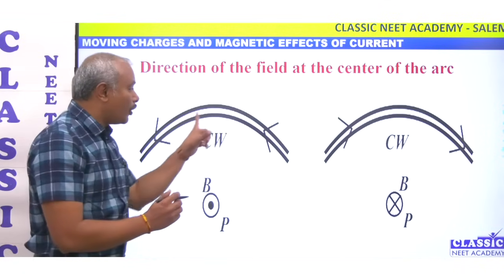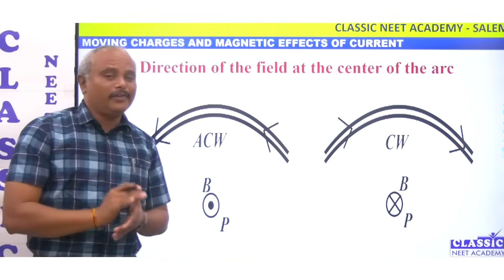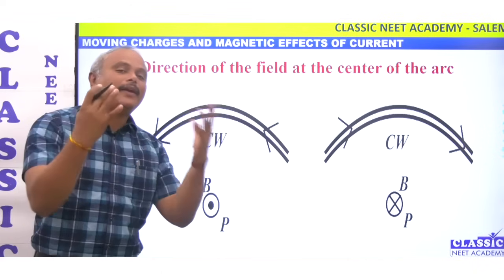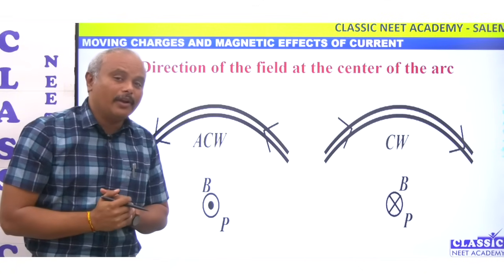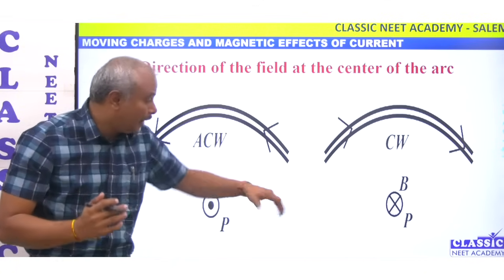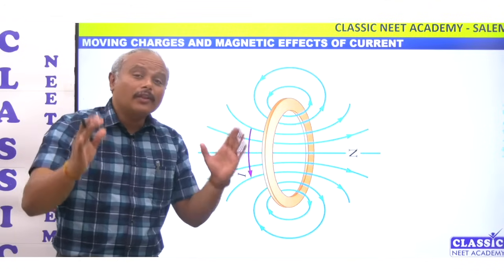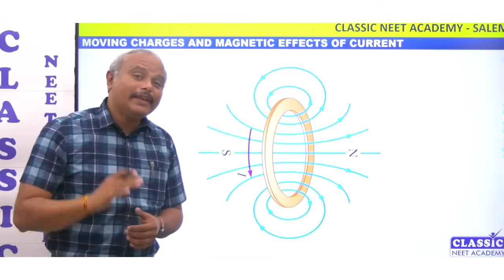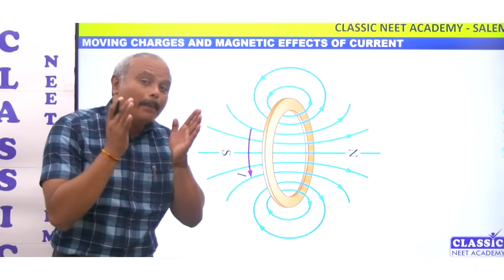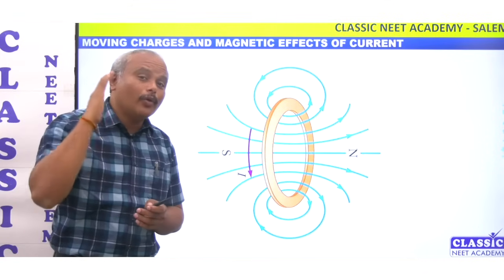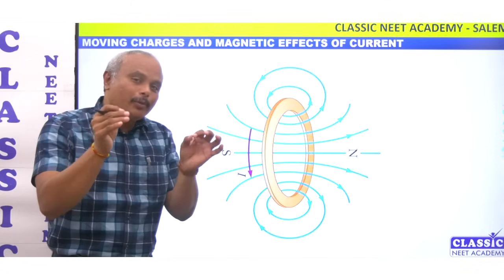If you look at a coil, that coil acts like a magnet — that's the simple explanation, which will be very clear in the classes. If there is a current flowing in a coil, that coil becomes a magnet. If we have a magnetic field, you can see in which direction the North Pole and South Pole face. Let's see a small example.